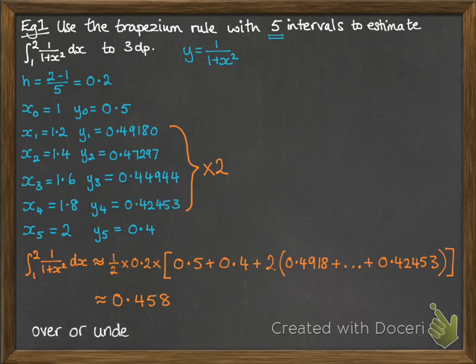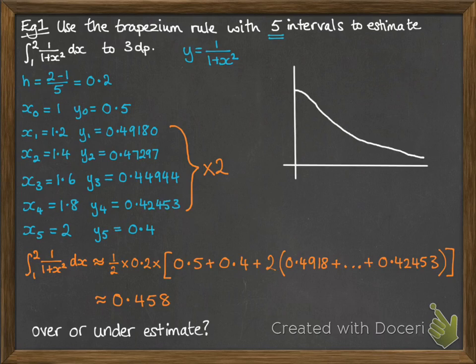Now you might be asked to think about whether this is an over or under estimate. For that, you'd need to know what the curve looks like. So this particular one looks a bit like this. Now between 1 and 2, you can see that that's sort of bending down. Now if you imagine a straight line between the 1 and the 2, making just that one trapezium, that helps you to figure out whether it's an under or over estimate.